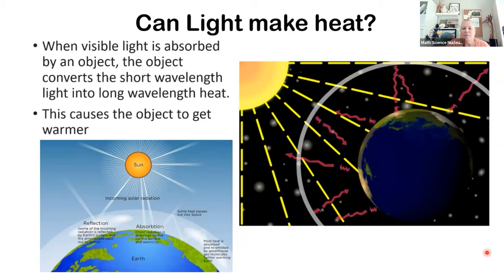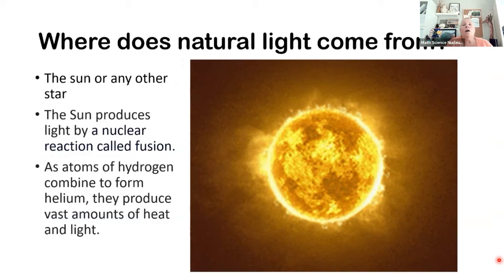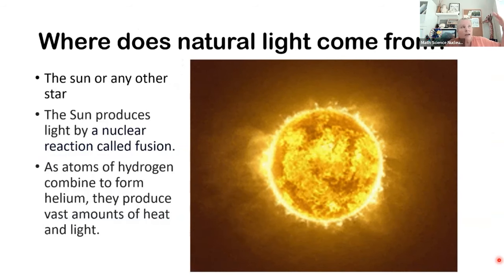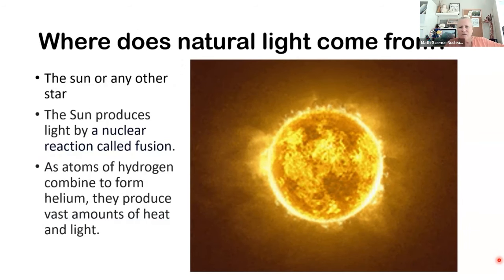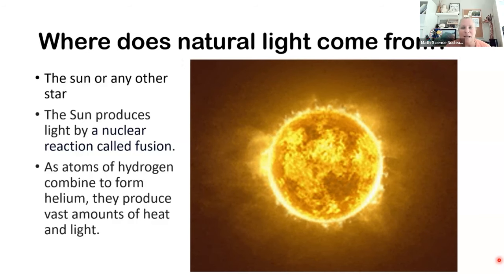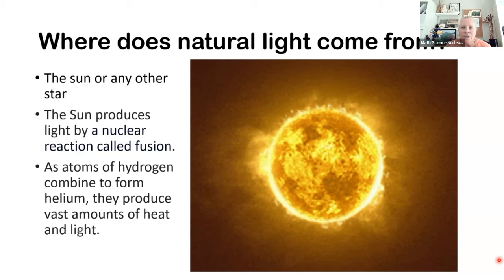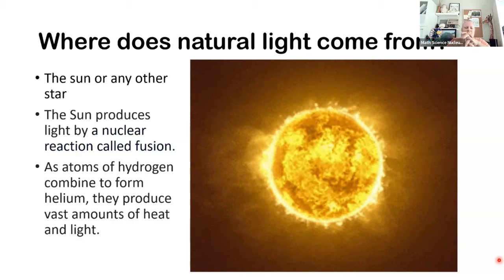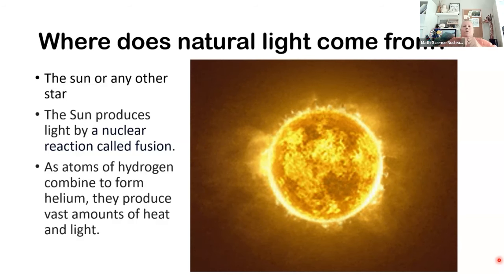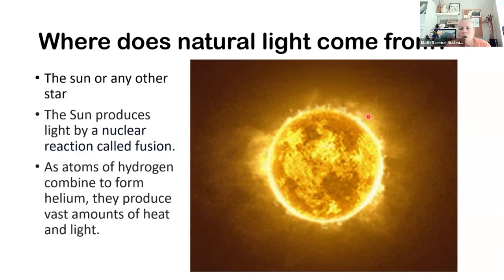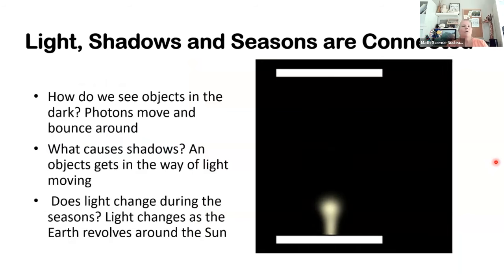Have you ever wondered how the sun makes light? It's so bright we can't even really look at it, and it's been burning for hundreds of years. All the stars we see in the nighttime sky produce their light the same way — through a nuclear reaction called fusion. All these chemicals react: hydrogen atoms combine with helium atoms, and when they do that they produce a lot of heat and light.